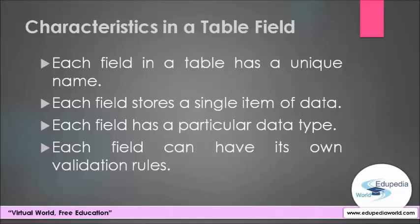The next characteristic is that each field has a particular data type — for example, it can be text, boolean, integer, date, or time value. The next one is that each field can have its own validation rules. These rules ensure that data recorded in the field is of the right type and right format.